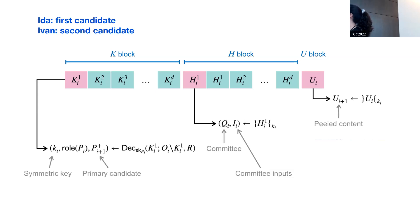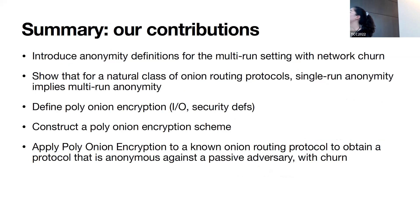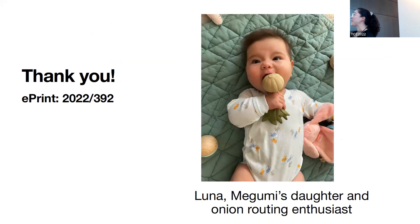This whole ciphertext is constructed by Alice when she forms her onion — she chooses the committee members for each hop and sets up their inputs. The overall structure: the k block contains the keys necessary to peel the rest of the onion, the h block contains the inputs for the committee protocol, and the u block contains the actual message. For other aspects of the paper, it is available on ePrint. As a final note: this is Luna, co-author Megumi's daughter, born while writing this paper — she's gotten an early start in onion routing and you can look out for her next paper soon.